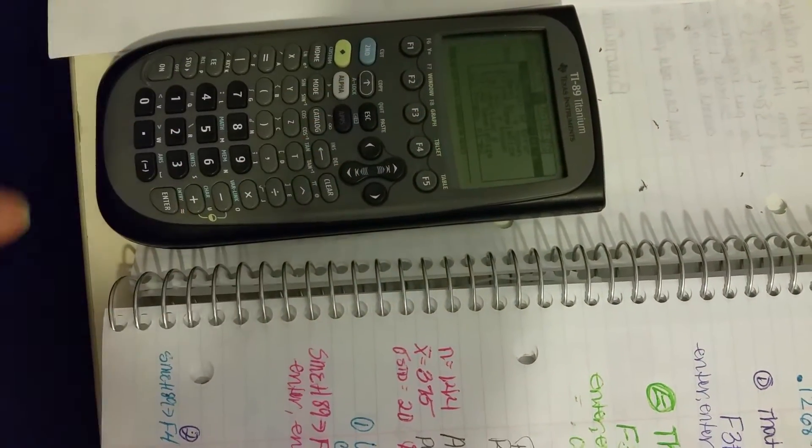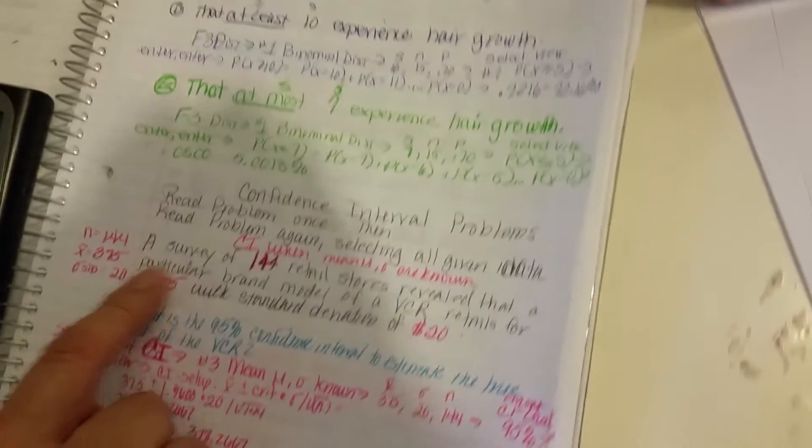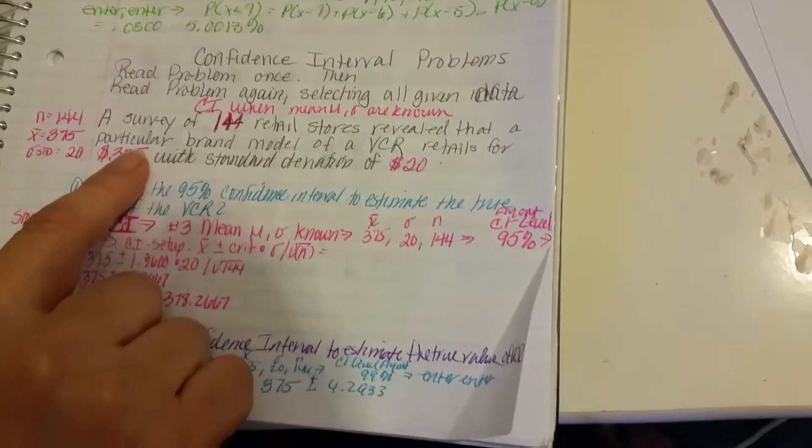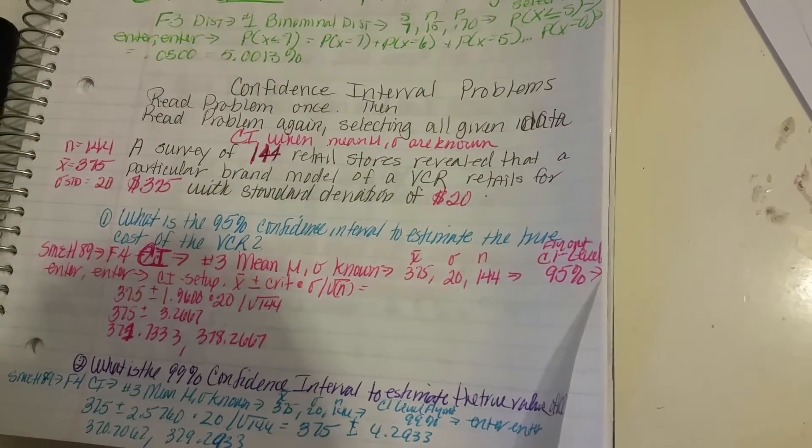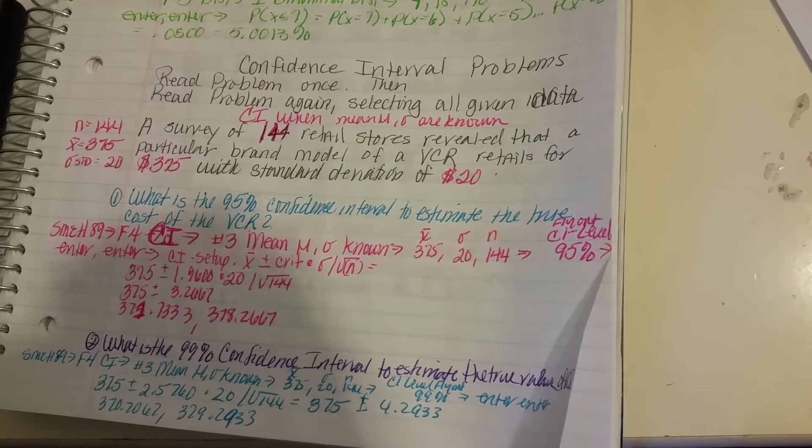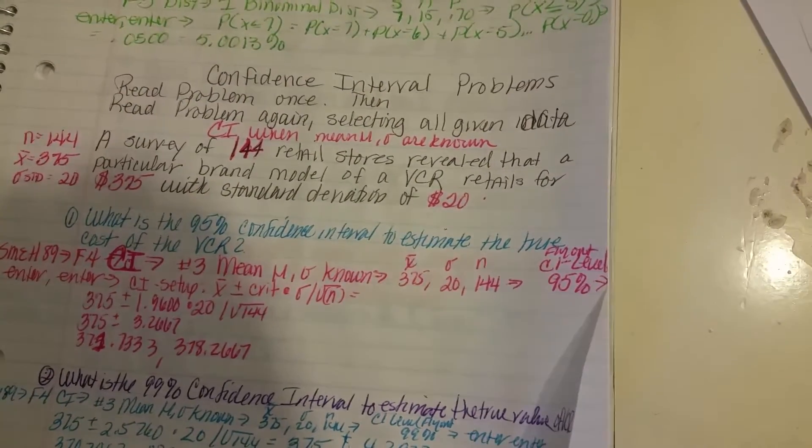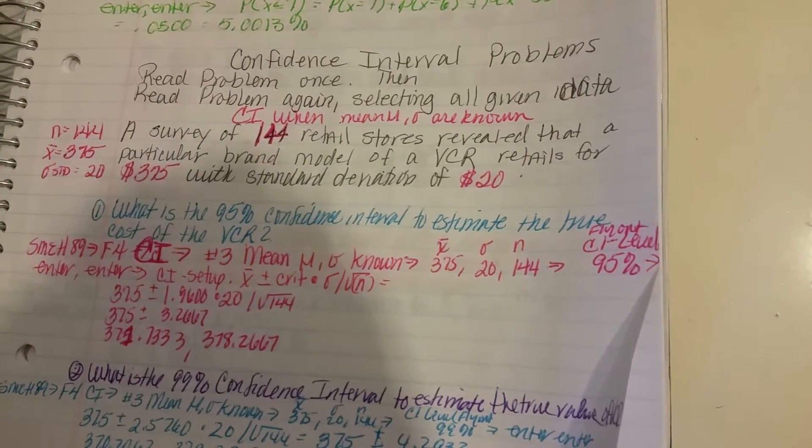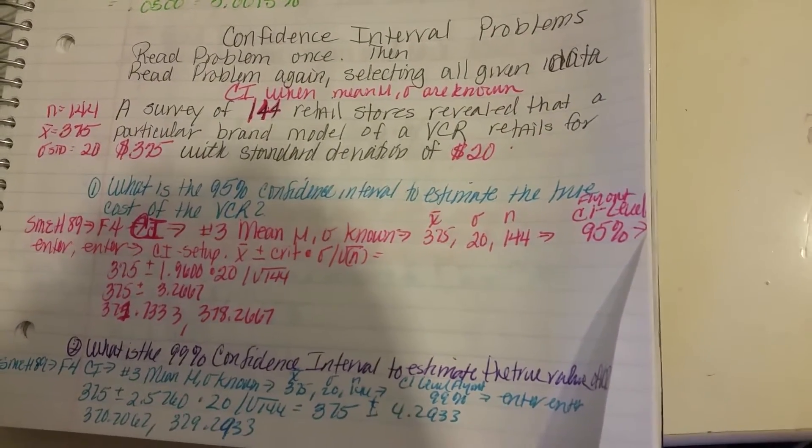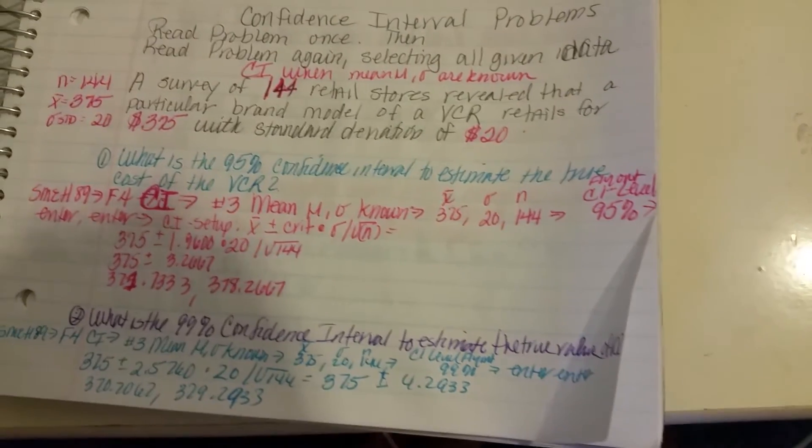You go F4. Then we're going to read the problem. It says, a survey of 144 retail stores revealed that a particular brand model of VCR retails for $375 with a standard deviation of $20. And the first question we want to answer is, what is the 95% confidence interval to estimate the true cost of the VCR?